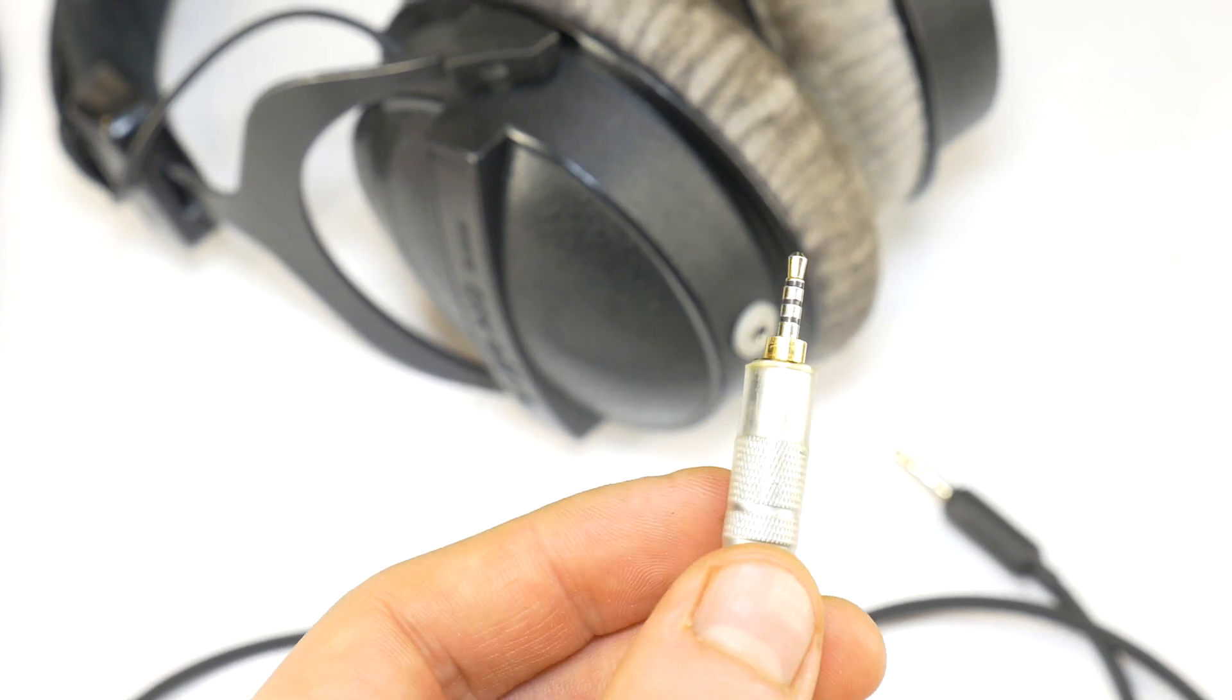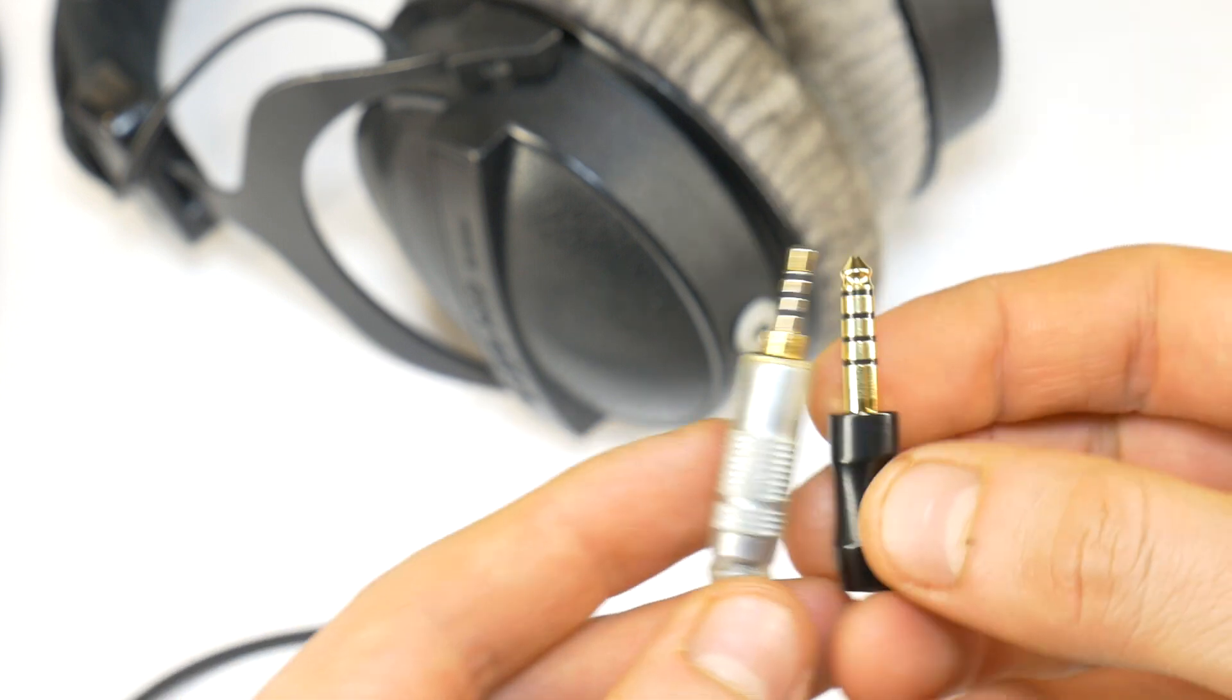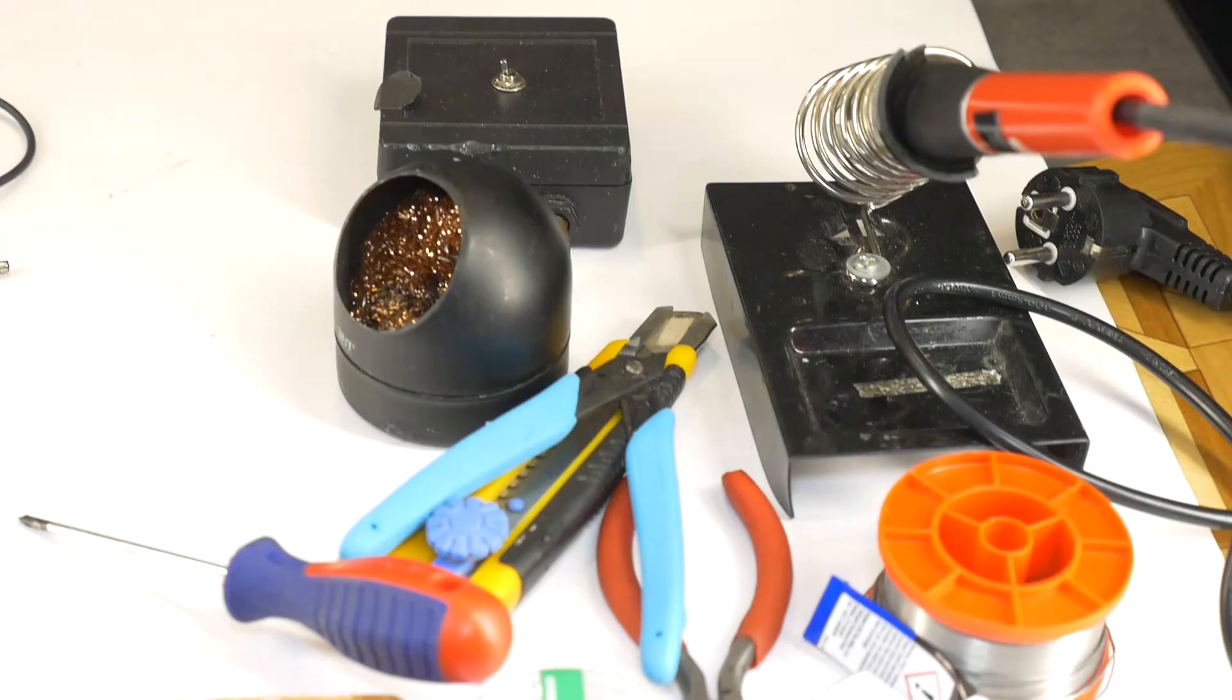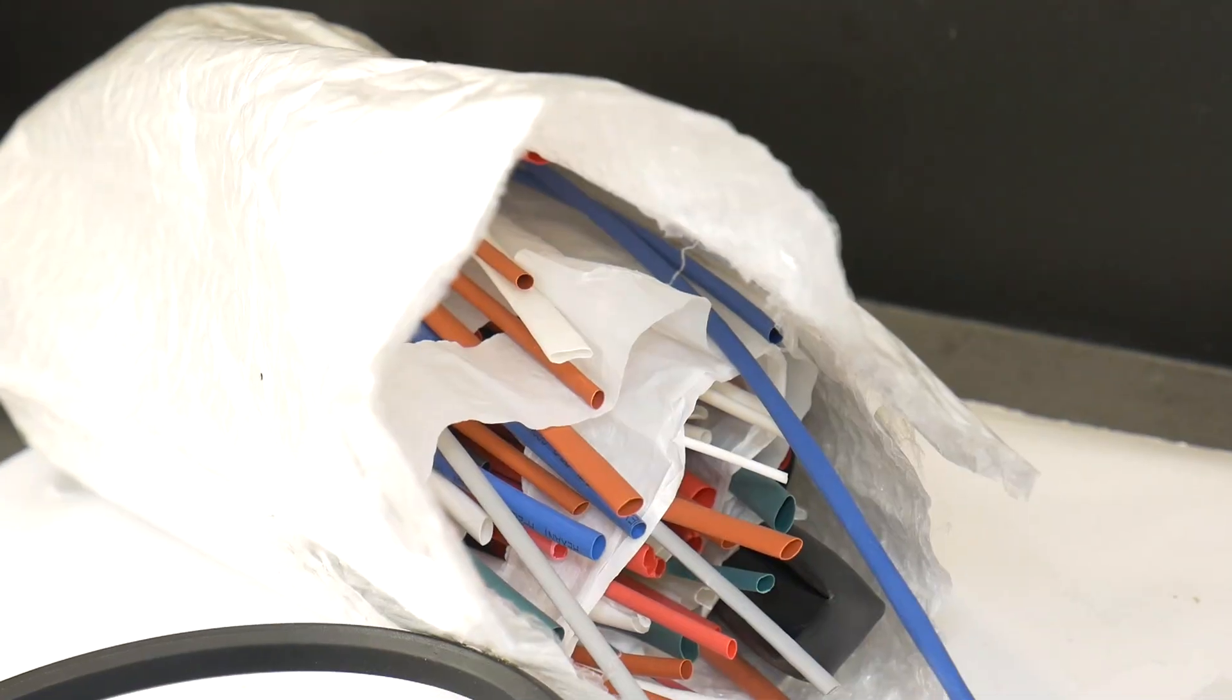Previously, these headphones were used with a 2.5mm balanced audio cable, but we will now change it to a 4.4mm jack. Additionally, to complete this task, you will need various soldering tools and some heat shrink tubing.